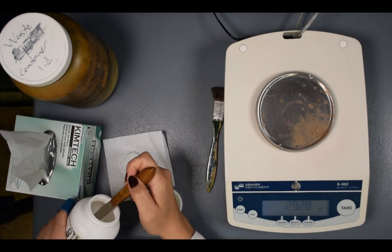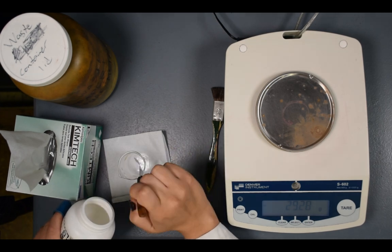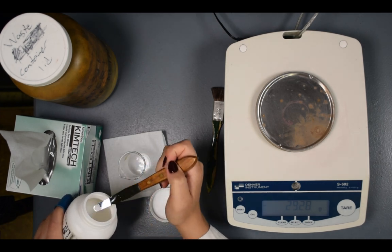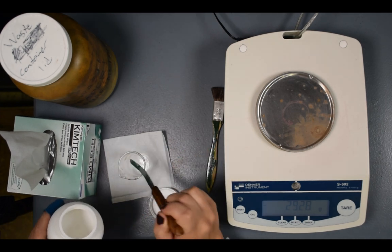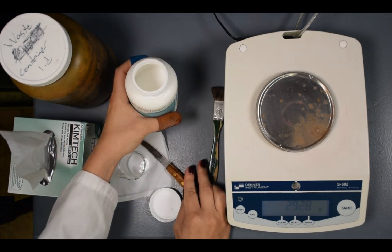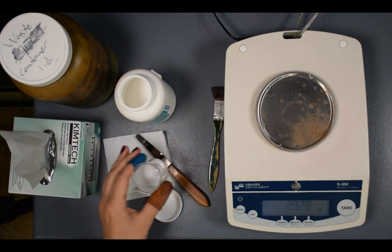Measure out the desired amount of compound to within 10%. To check the mass of compound added, return the beaker to the balance.